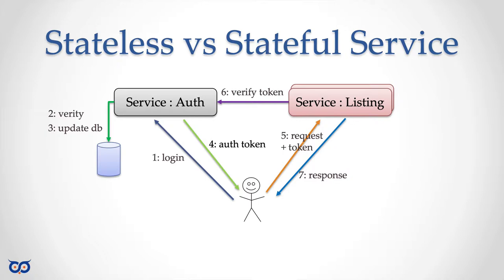You can't scale stateful services as easily. With the auth service, if you try to scale and have two instances, you have to decide: do they share the same database? What locking semantics do you need? How do you reconcile differences? The listing service, by contrast, is just multiple copies — it reads from a database but doesn't update anything. The auth service, on the other hand, updates tokens, tracks expiry, and deletes expired tokens. That's a stateful service.